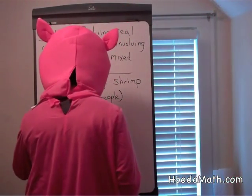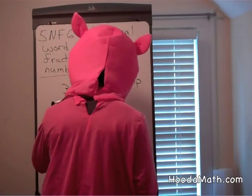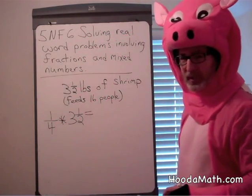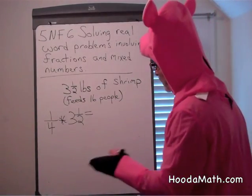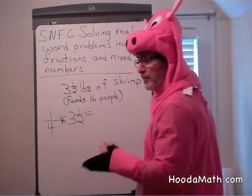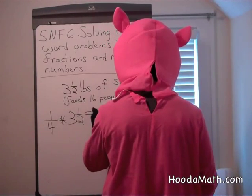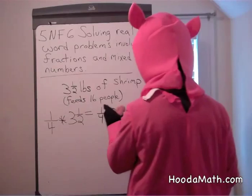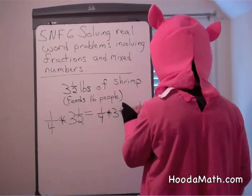So you're going to have one-fourth of three and a half pounds of shrimp. How would we solve the problem? How much shrimp should you buy? Well, you can divide the three and one-half into three plus one-half, and we take one-fourth of three and add that to one-fourth of one-half.